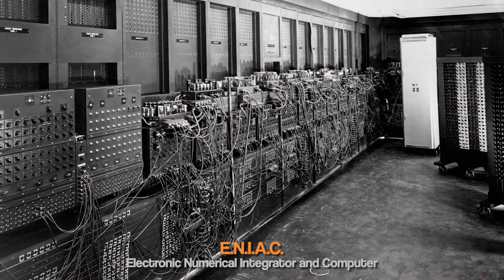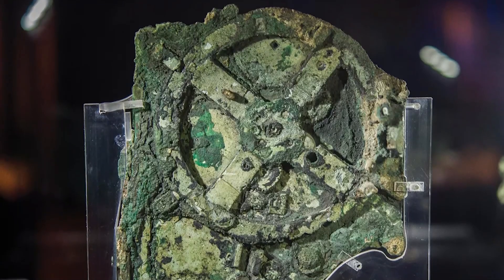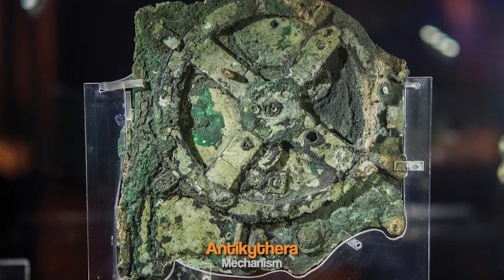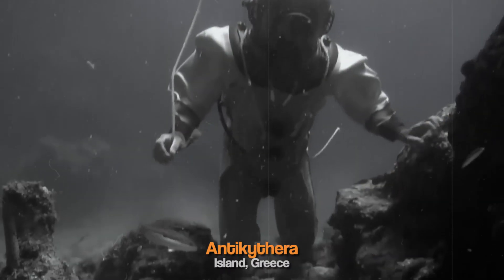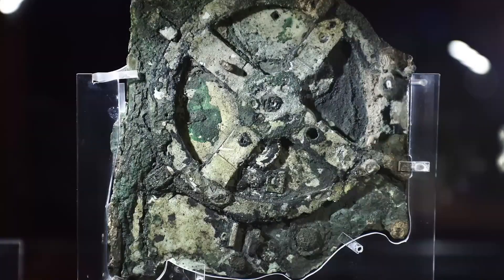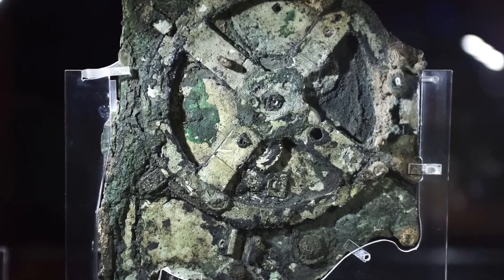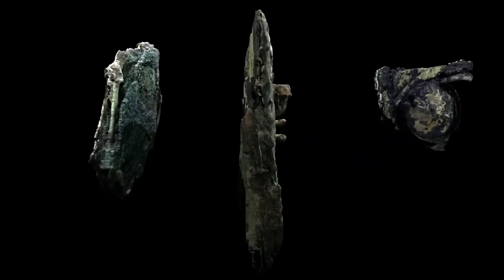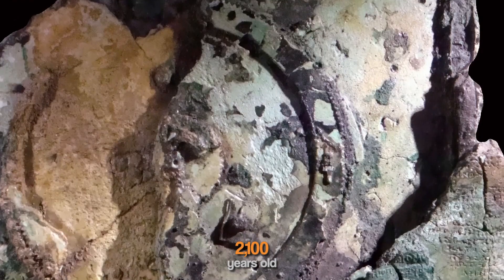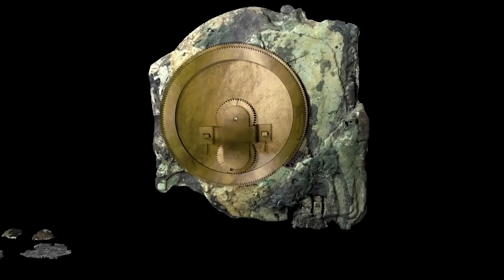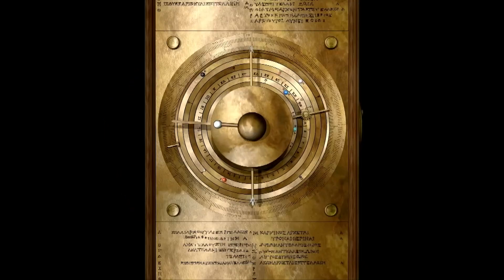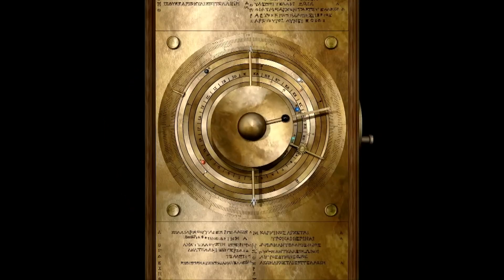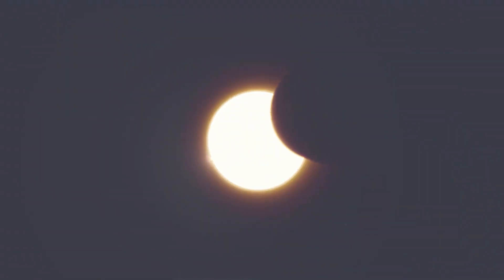The first computer was not the ENIAC like most people think. It's called the Antikythera Mechanism and it was uncovered in 1901 when a group of divers retrieved artifacts from a shipwreck off the coast of Antikythera Island in Greece. After studying the mechanism, scientists concluded it dates back to the second century BC, making it around 2100 years old at the time of discovery. Thanks to 3D modeling, we understand how the different parts worked and the ancient Greeks used it to predict eclipses and other astronomical events.